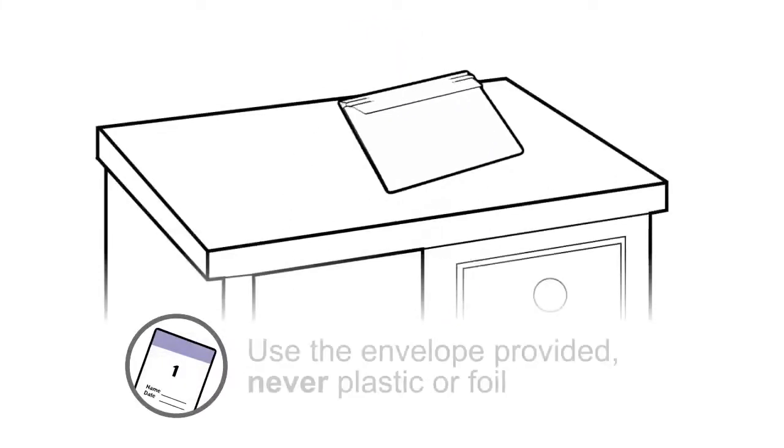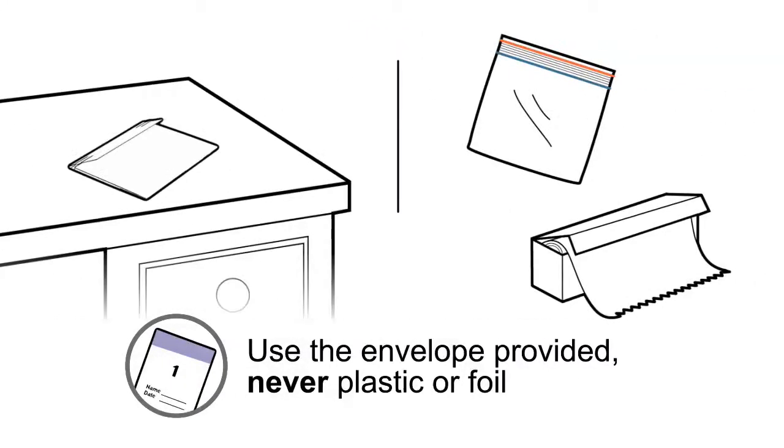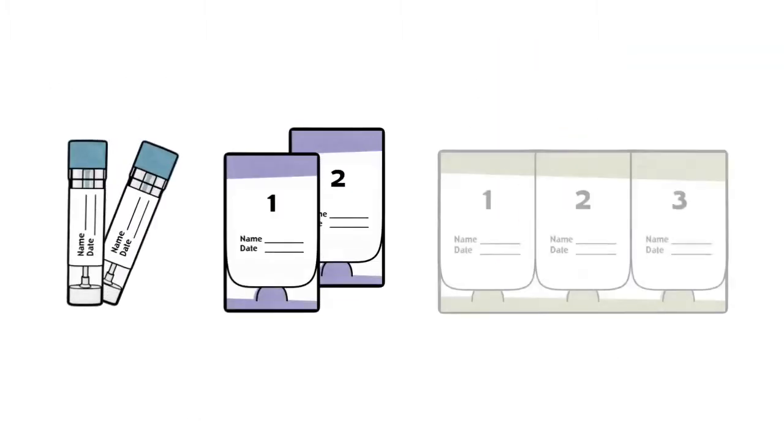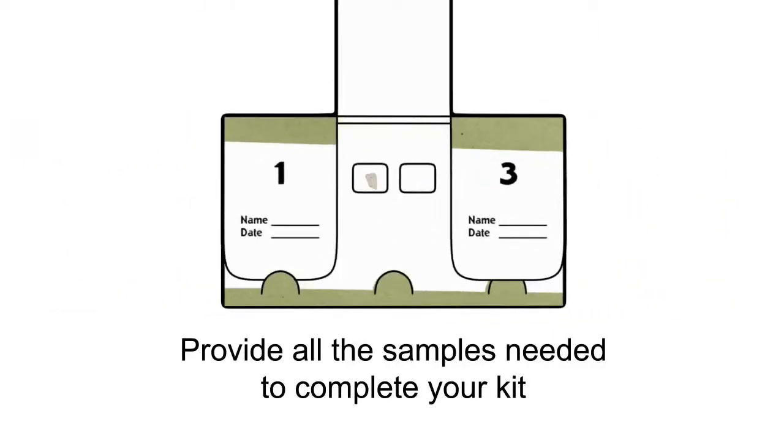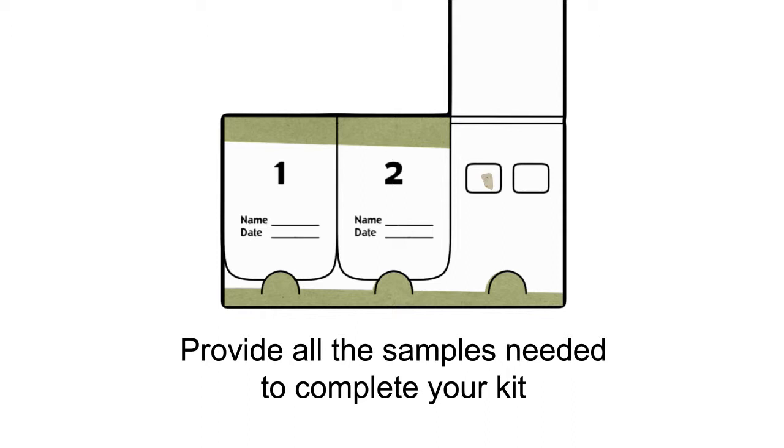Use the envelope provided, never plastic or foil. If your kit includes multiple bottles, cards, or card flaps, repeat these steps with your next bowel movement until you've completed the kit.